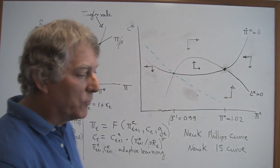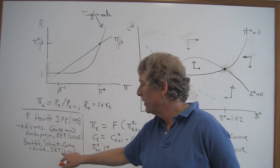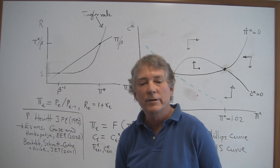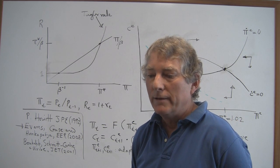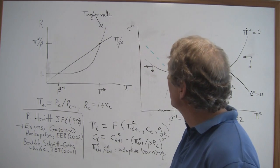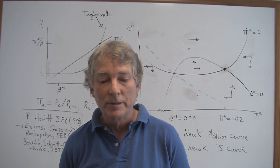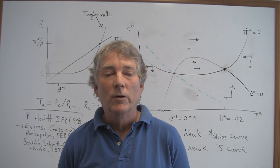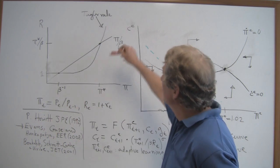So the crucial framework here, our starting framework, is actually a paper by Benhabib, Schmitt-Grohé, and Uribe that was in the Journal of Economic Theory in 2001, where they pointed out that if you have a Taylor rule subject to a zero interest lower bound, then you got the possibility of multiple equilibria. So I'm going to summarize the whole argument in two diagrams. That's the first diagram.